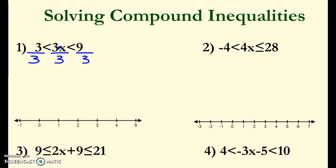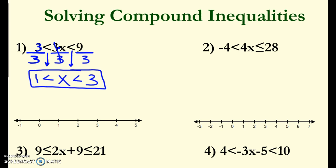So now I have 3 divided by 3, which is 1. I'm going to bring down my inequality sign as is. My 3s in the middle cancel because I wanted to get that x all by itself. I bring down the same inequality sign — less than — and then 9 divided by 3 gives me 3. Notice that x is all by itself, so I know that I'm done. There are no other x's, so I know I'm complete.